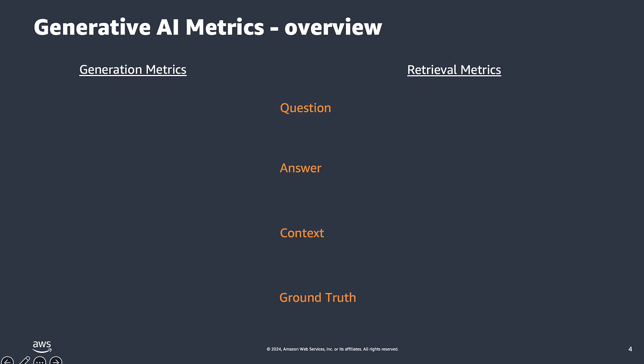All of the LLM system evaluation metrics we will be covering measure four core elements in relation to one another. These core elements are the question, the answer, the context, and the ground truth. On the left side, we list generation metrics, and on the right side, we list our retrieval metrics.